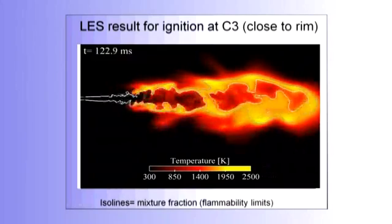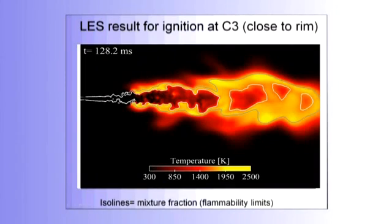You see the flame is not starting here. The flame is what we call lifted. There is a zone here in which there is no flame. Mixing is taking place. I will come back to that later. And then the flame is stabilized here. So this is an example where you ignite the flame, and it works, and you get ignition.